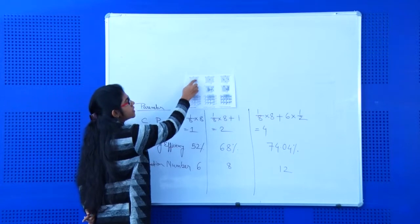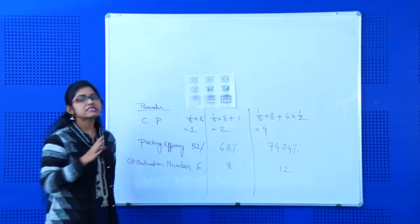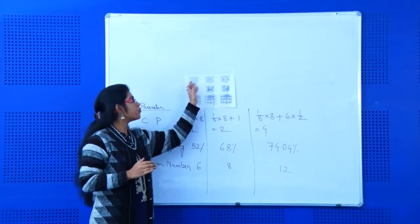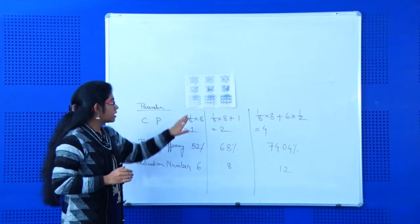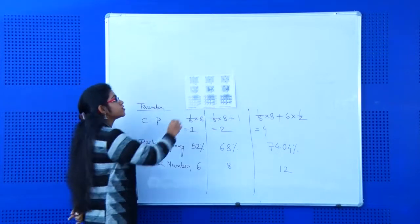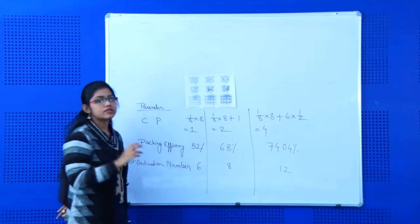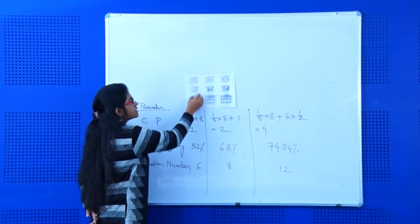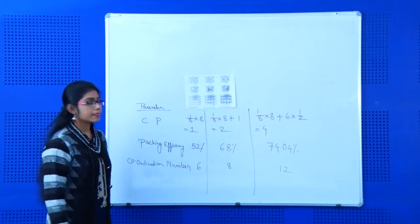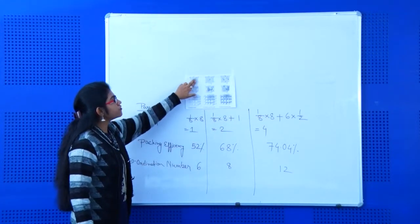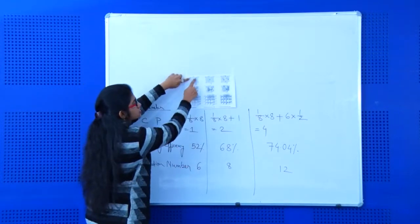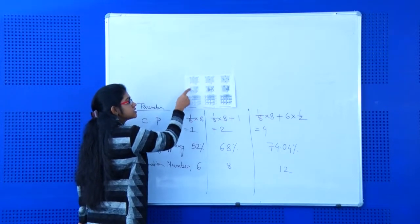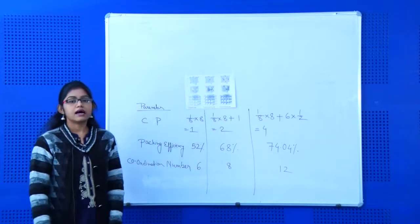In a cubic, there are a total of six faces, eight corners, and one center. In the case of simple cubic, the constituent particles are only at the corners — there are eight corners in the unit cell, so eight constituent particles will be there. This is the cross-section view, and the constituent particles will obviously touch each other.